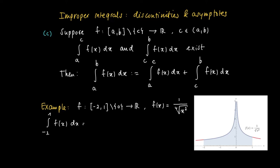So when we write the integral from -2 to 1 f(x) dx, we actually mean that this is the integral from -2 to 0 f(x) dx plus the integral from 0 to 1 f(x) dx, if only these integrals exist.